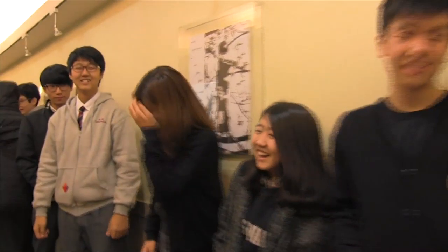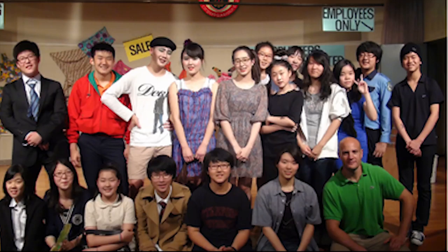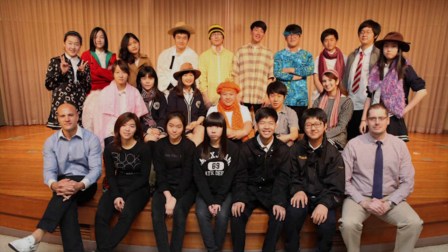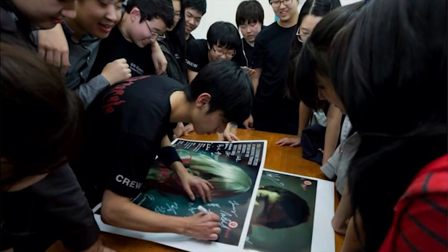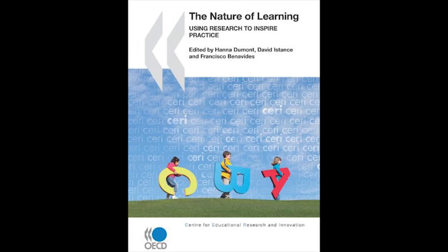I chose my Year 11 drama class as the test subject for this project for a few specific reasons. Number one, all 21 students share the same ethnic background — they are all Korean nationals. Number two, I have known, taught, and worked with most of this group for the past five years continuously, giving me a very familiar connection with them. This is supported by Chapter 13 of The Nature of Learning: understanding the different backgrounds and starting points that young people bring to the learning environment is an integral element of understanding the strengths and limitations of individual groups of learners, as well as the motivations and aspirations that shape the learning process.